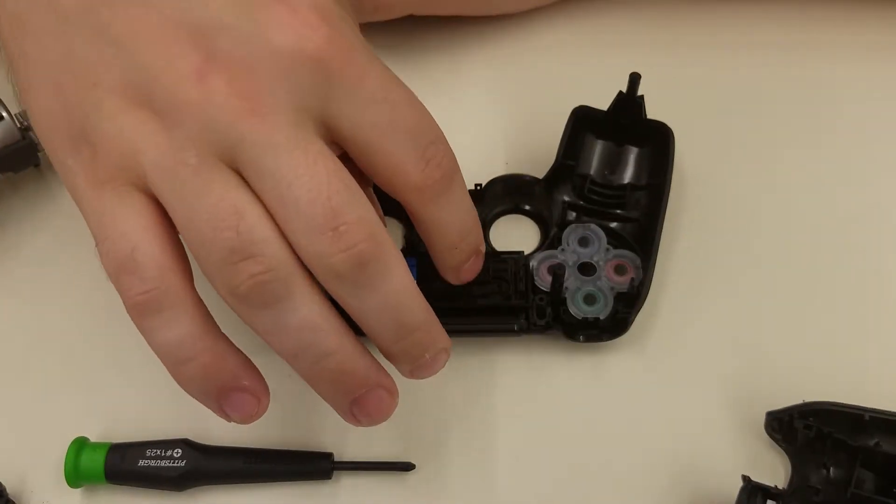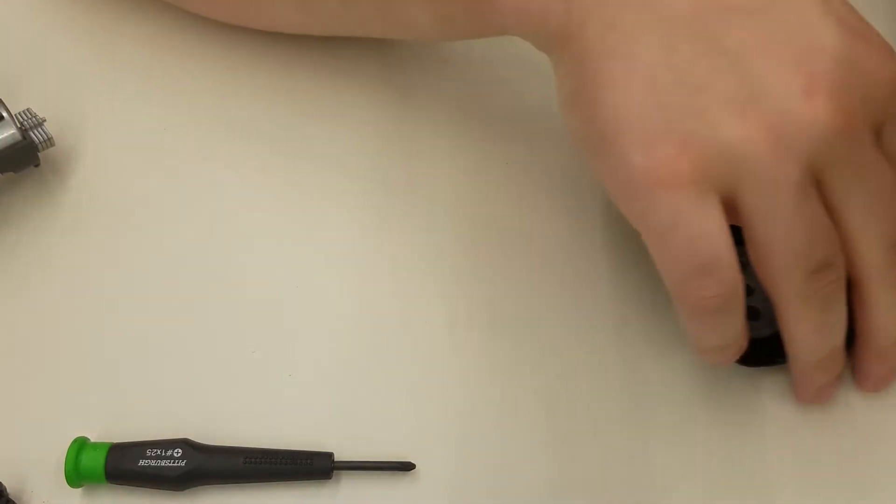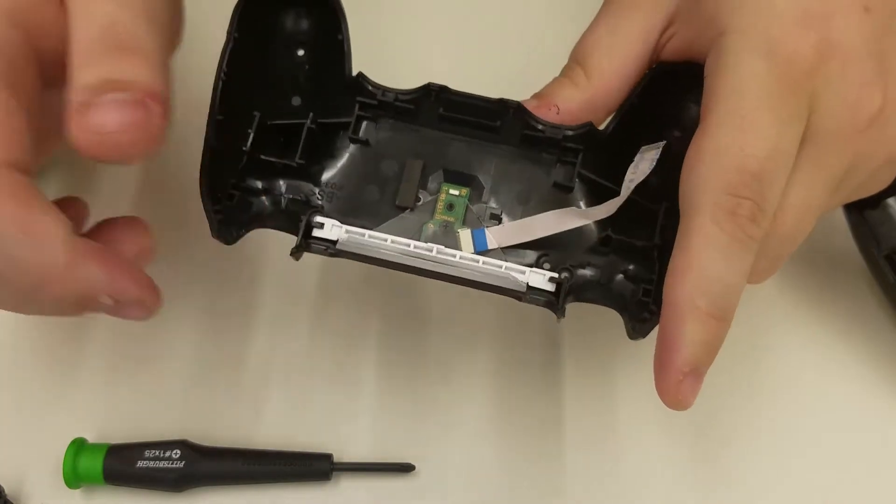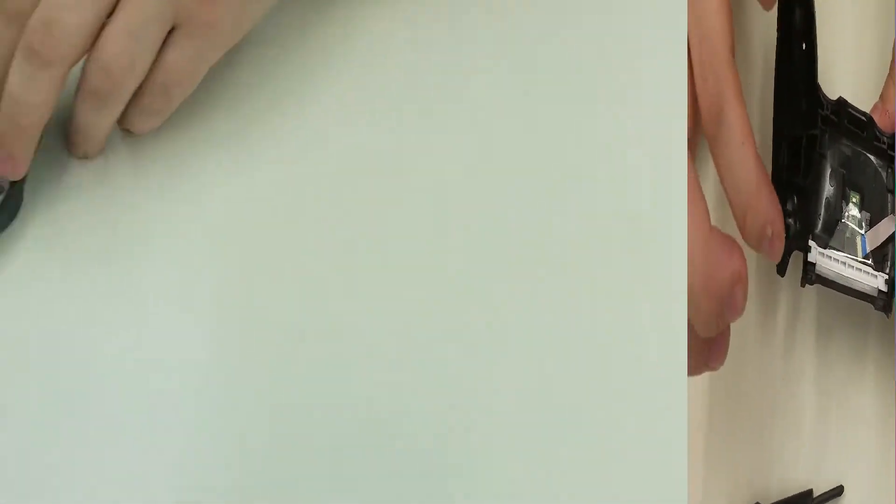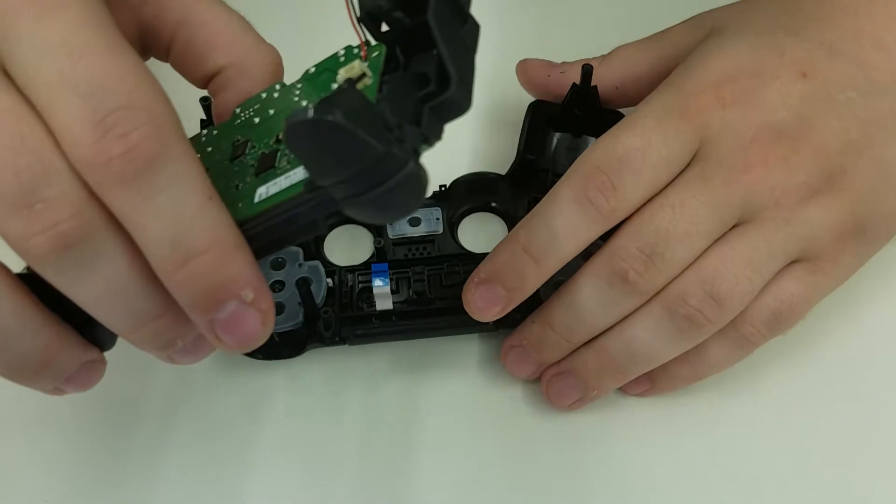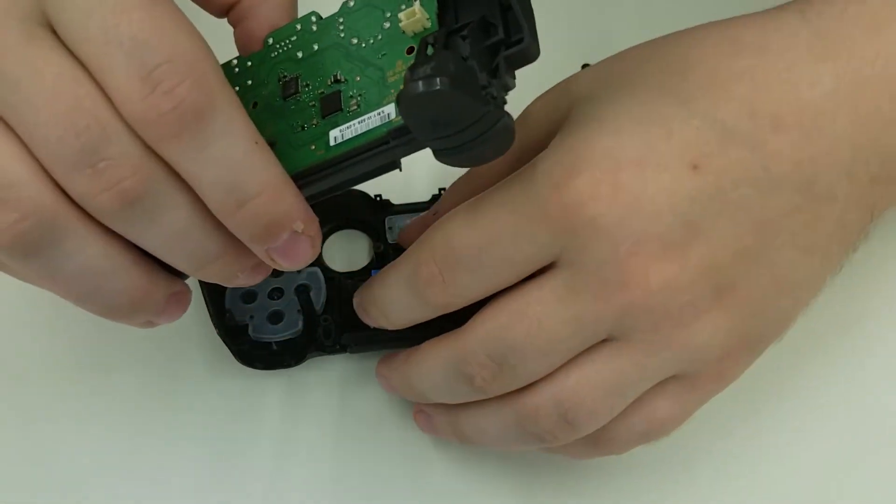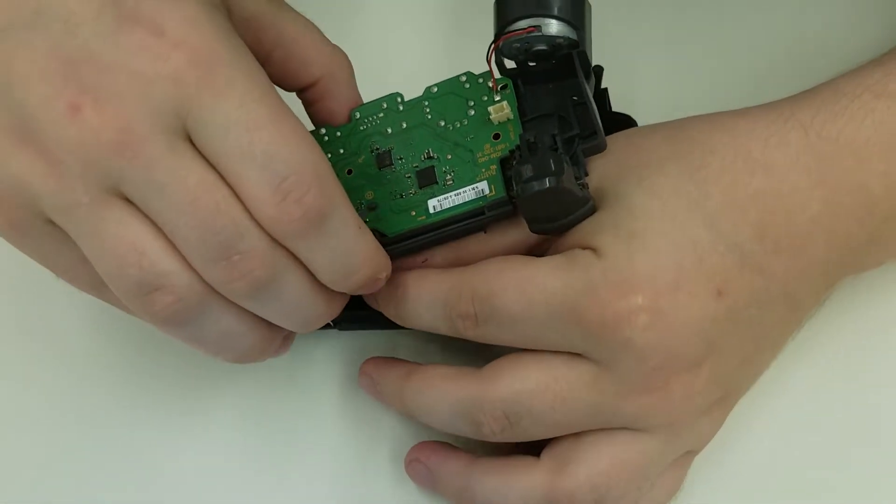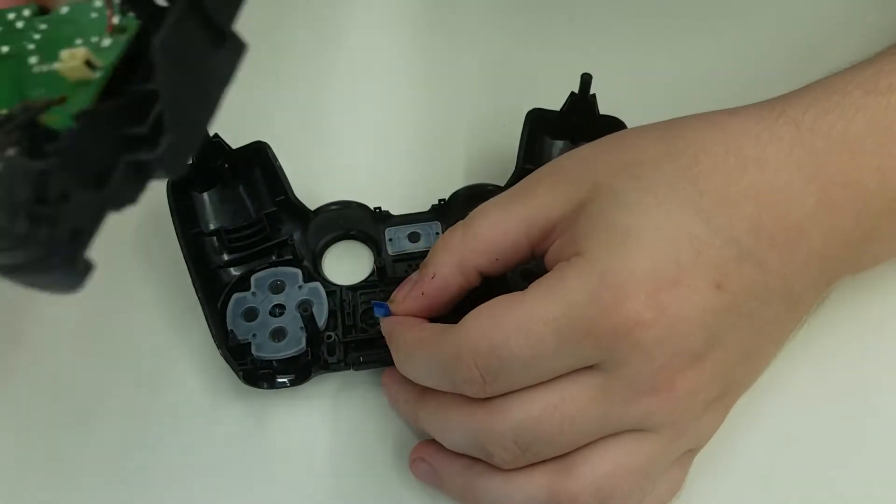And then there's the light bar. Now on this other part we have the light bar. You want to feed this into the little hole right here, this little blue thing.